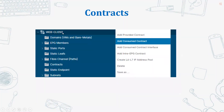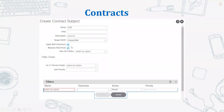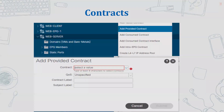We also go to the web client EPG and consume that particular contract. This configuration means the flow from web client EPG with source port any to destination port 80 and 443 is allowed. For the reverse direction, when creating the filter under the subject there is a 'reverse filter ports' option which is checked by default, meaning bidirectional communication will be allowed.